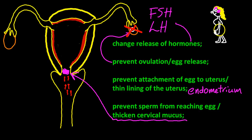One way to get no points is to just say the words 'mimic pregnancy'. The IB specifically says you can't just say 'mimic pregnancy' to get three points.